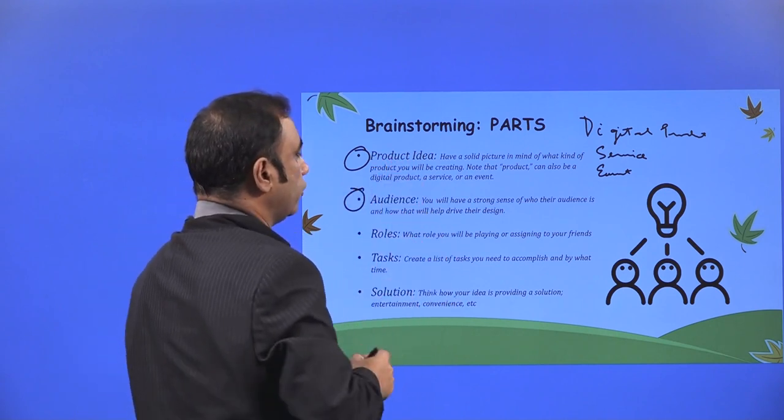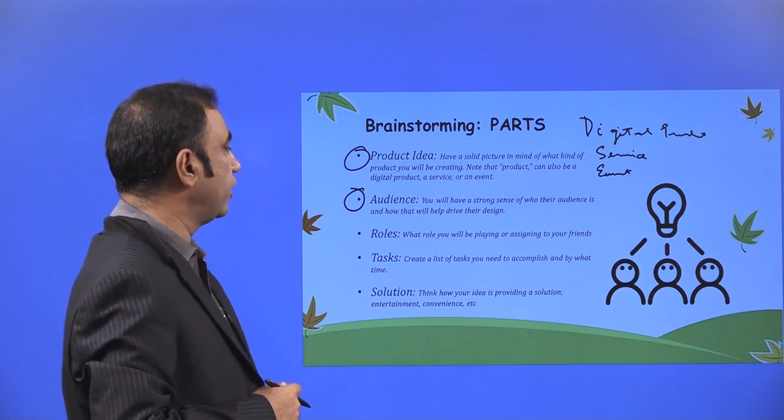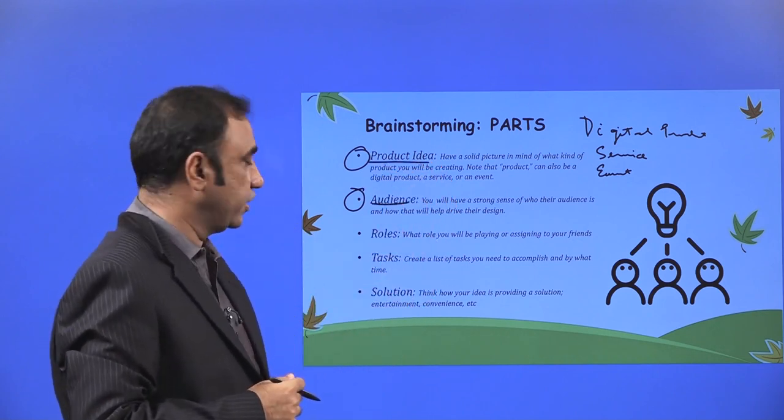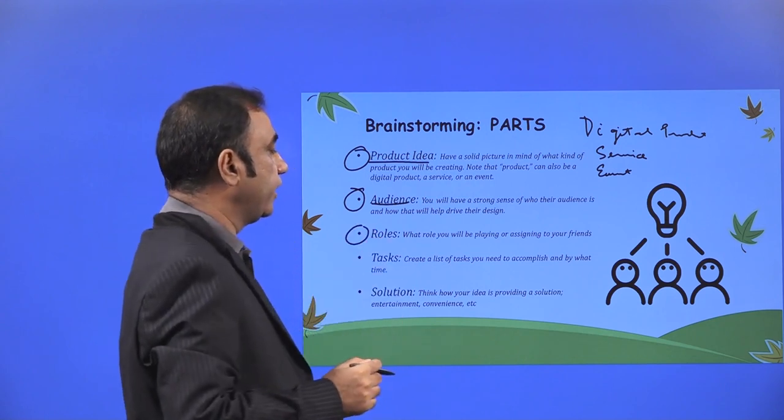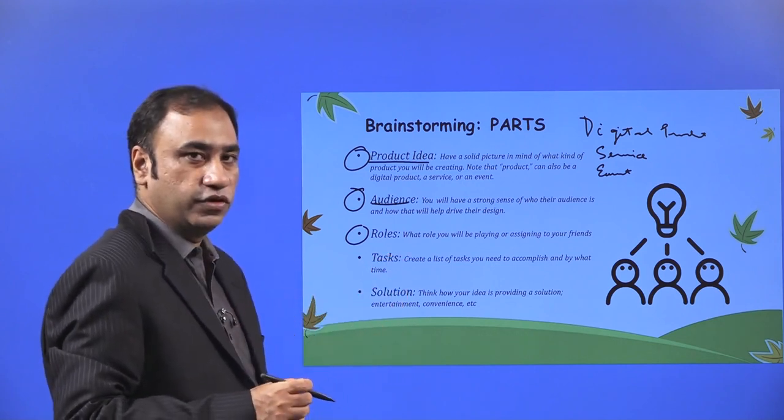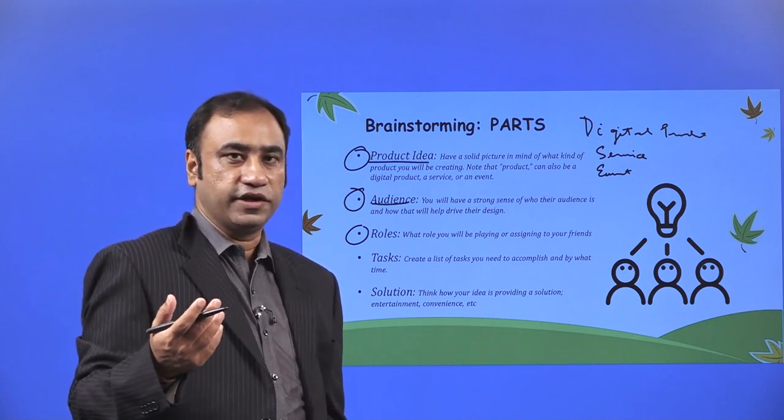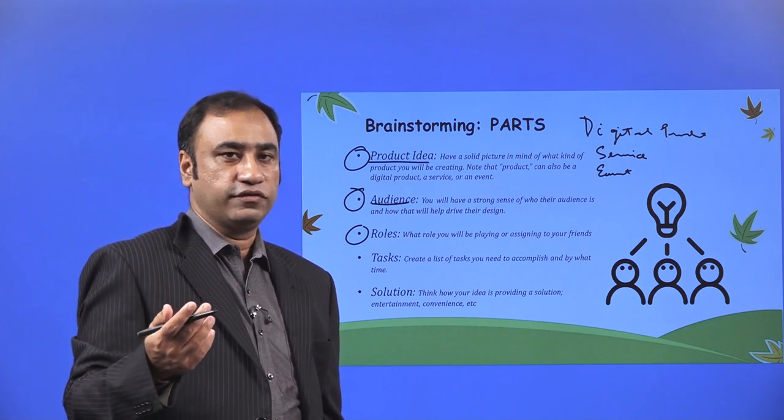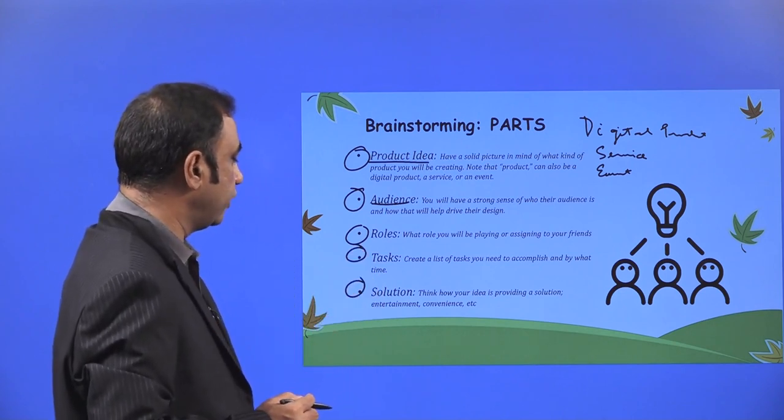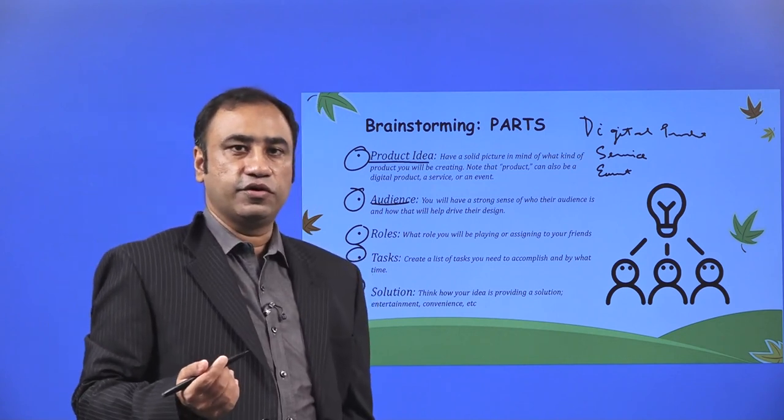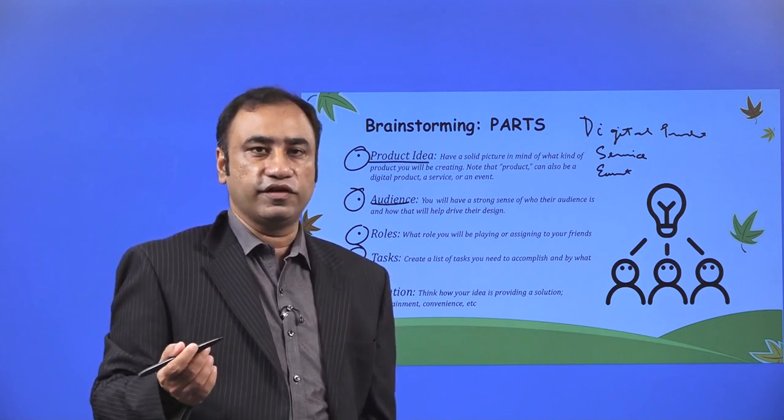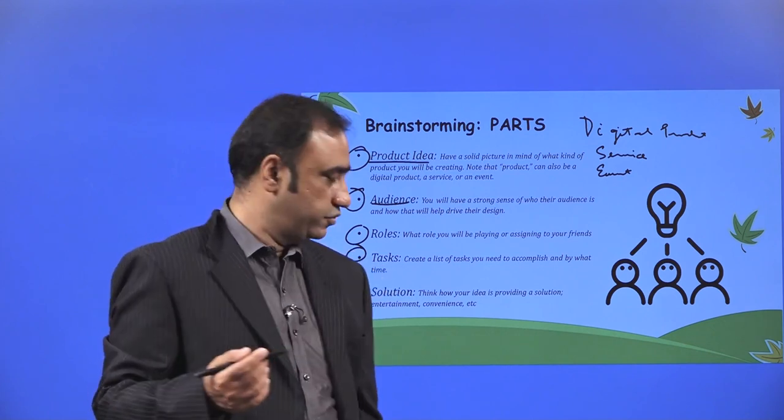Audience. Who are the audience of your product? You will have a strong sense of who their audience is and how that will drive their design. Keep the audience in mind when creating your product idea and know who is your audience. Roles. What roles you will be playing or assigning to your friends or team members? Tasks. Create a list of tasks you need to accomplish by what time. As we've seen in time boxing, every task has a time allotted to it and you have to track that task. Solution. Think how your idea is providing a solution, entertainment, convenience. It's about understanding the pain points and taking one person from the pain point state to the solution state where you solve their problem.